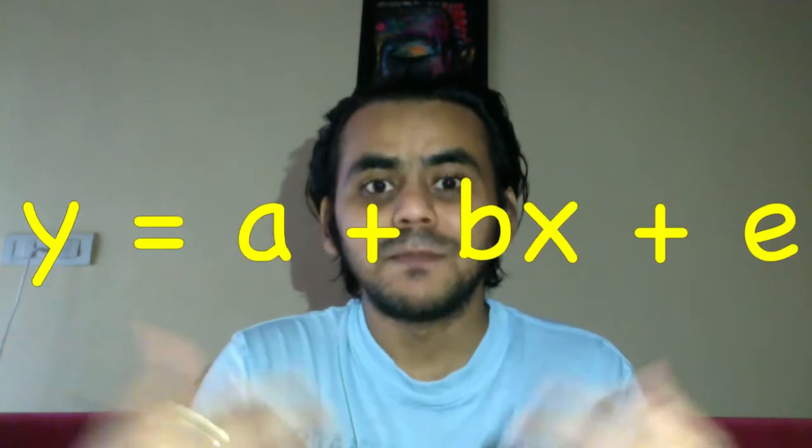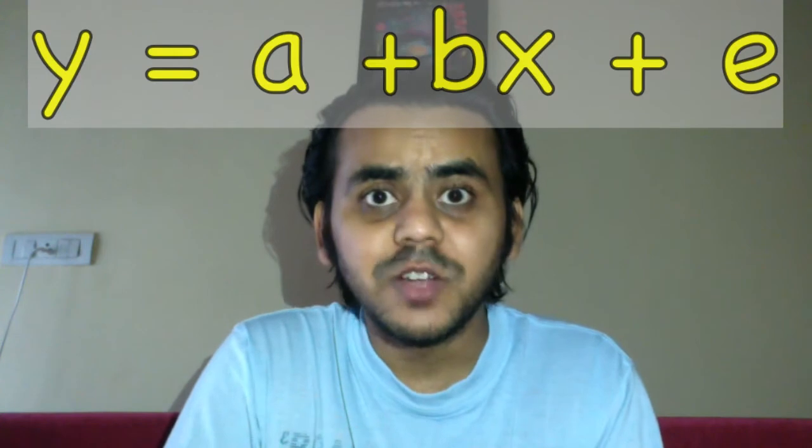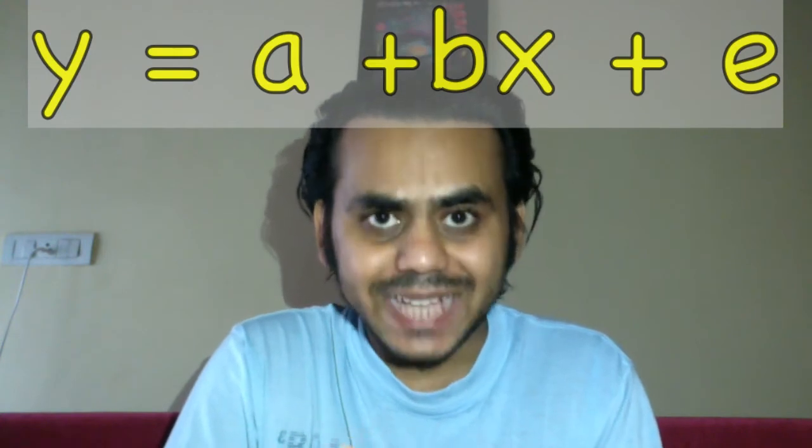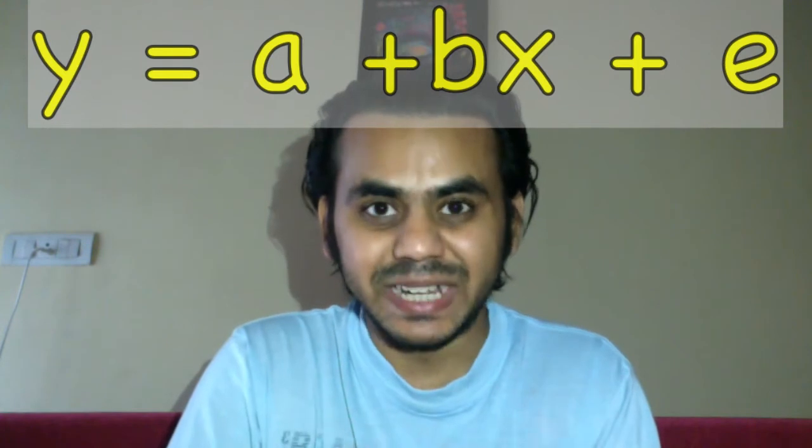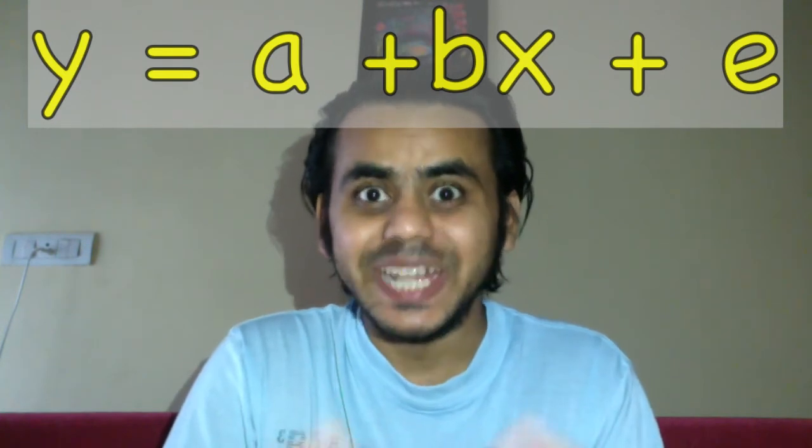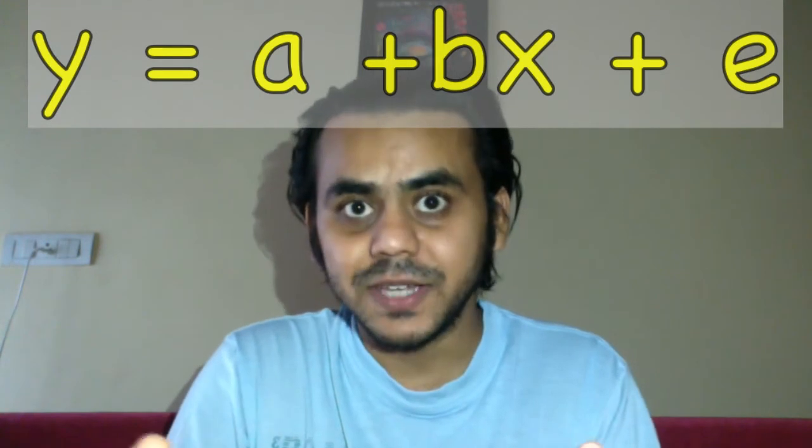Over here, y is the thing which we're trying to predict, x is the predictor. In other words, y is dependent and x is independent. X decides y. A basic assumption here is we have established that x is deciding y, y is dependent on x.